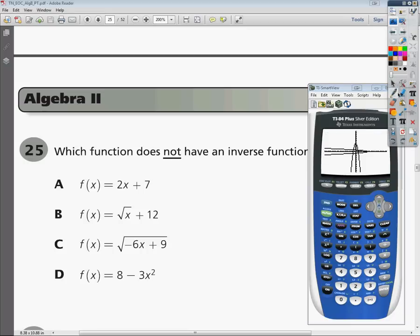And as you can see, this one fails the vertical line test. So it does not have an inverse function. It does have an inverse relation, just not a function. So your answer to number 25 is D. And if you do it yourself, it's a lot faster. I just want to take a little bit of extra time to make sure that I covered it. So good luck.